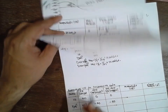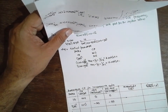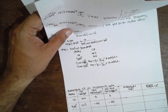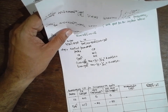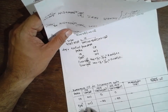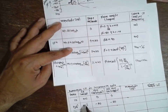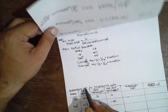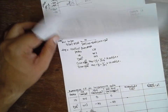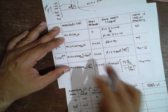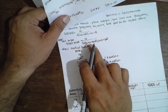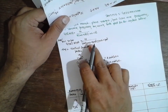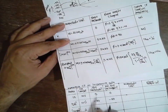Next, consider (1 + 0.5jω) raised to minus 1. The corner frequency is 2 radian per second. The slope is minus 20 because it is at the bottom (denominator). Net slope: minus 20 minus 20 = minus 40.